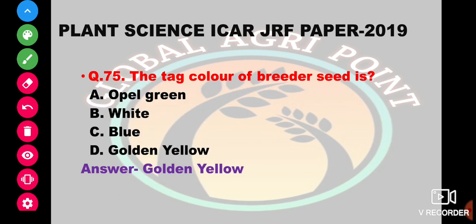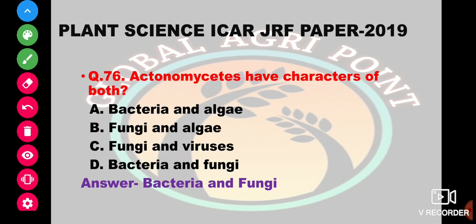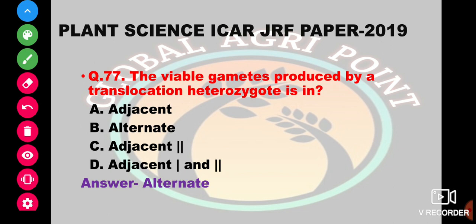The tag color of breeder seed is golden yellow. For truthfully labeled seed it is opal green, white for foundation seed, blue for certified seed, and golden brown or golden yellow for breeder seed. So the answer is golden yellow. Actinomycetes have the character of both bacteria and fungi. The answer is bacteria and fungi.